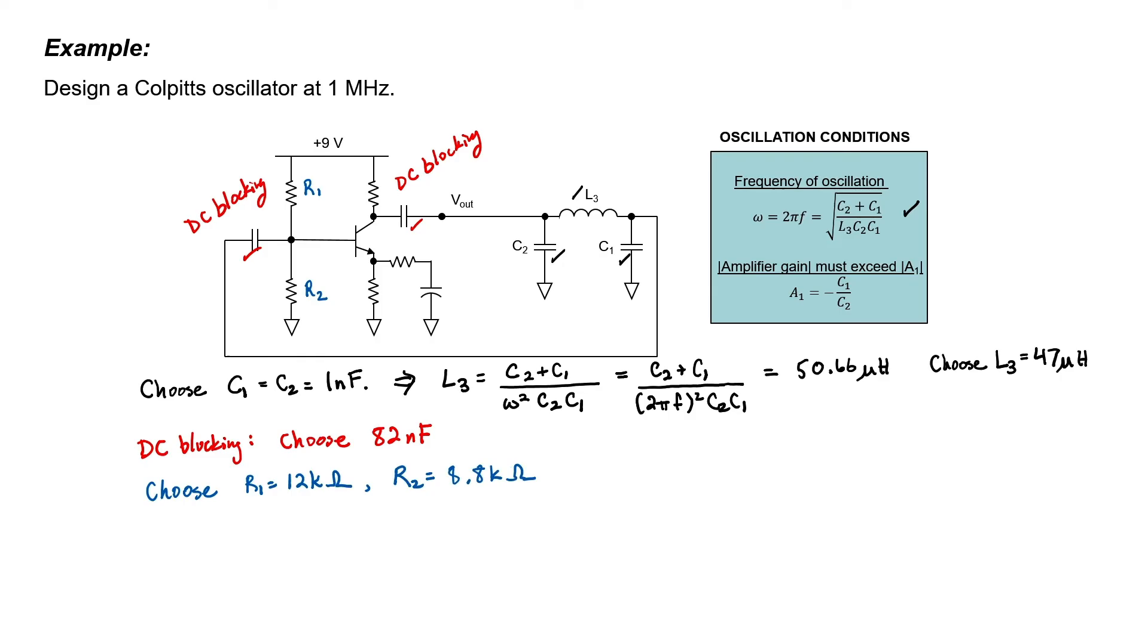The approximate gain of a transistor in the common emitter configuration is the collector resistor RC divided by the emitter resistor RE. So if I choose both of these resistors to be 1 kΩ, then I should have approximately a gain of 1 across this transistor circuit. We need a gain of at least 1 in order to make the oscillator work.